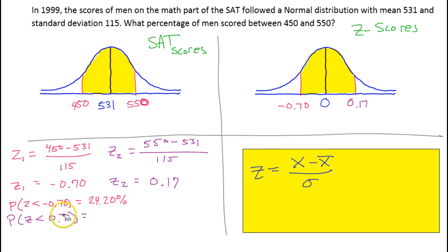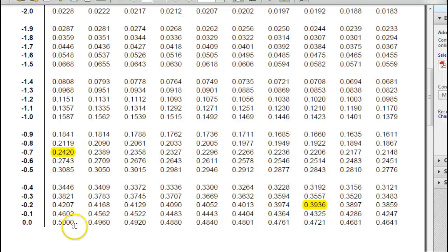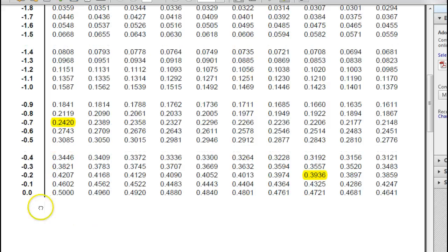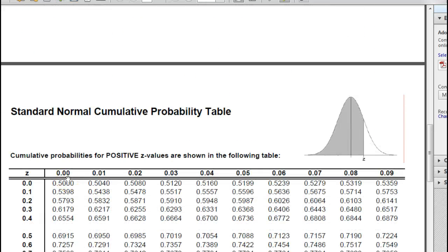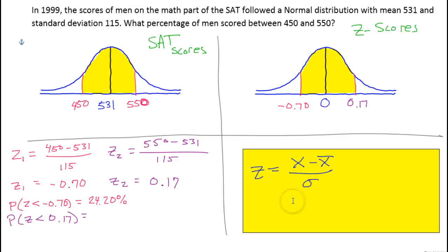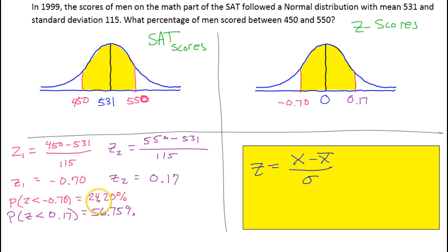0.17. That's a positive number, so let's go to this side. Here's 0.1, and then 0.10, 0.11, 0.12, 0.13, 0.14, 0.15, 0.16, 0.17. So, that's 56.75% below that particular z-score. We found that 24.20% of the data is below this number. 56.75% of the data is below this number.